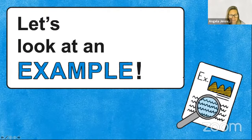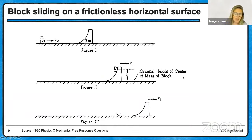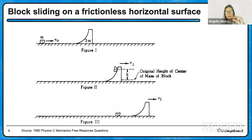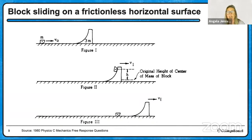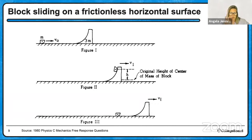Let's do a vintage free response question. A block slides on a frictionless horizontal surface; we're given its mass and initial velocity V0. It encounters a ramp of mass 3M, and the block goes up the ramp. At the peak of its motion, the block is not moving relative to the ramp — so at that instant, they move together with speed V1. The block's center of mass rises a height H. Then the block slides back down onto the surface, and the ramp moves right with velocity V_final.